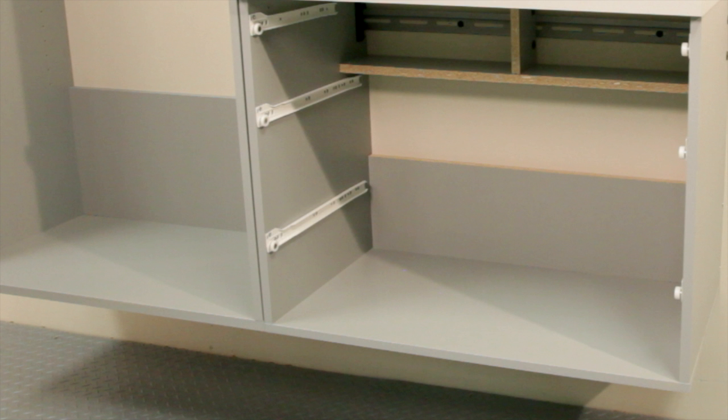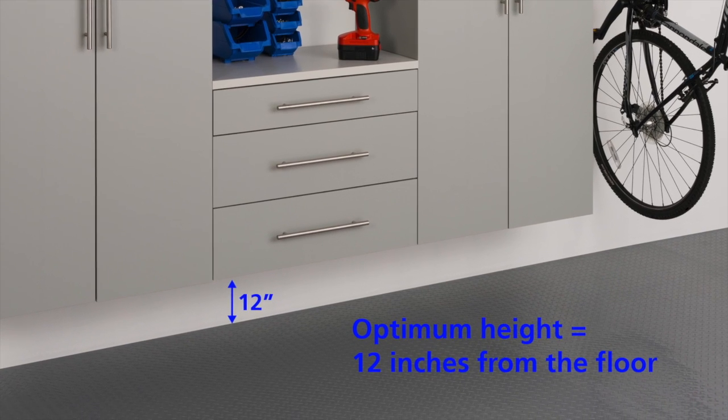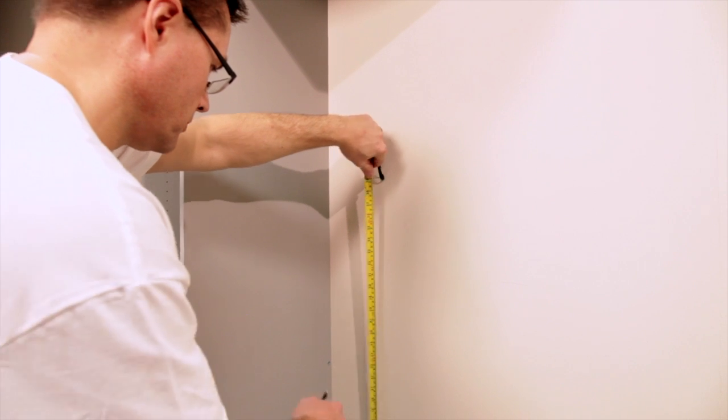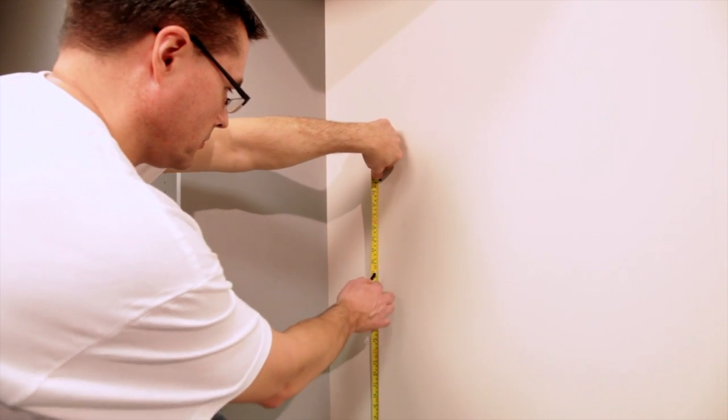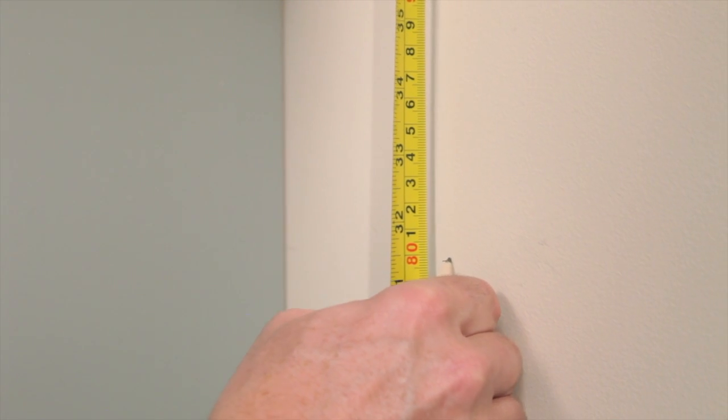We want the bottom edge of the lower cabinets to line up with the bottom edge of the tall cabinets, at 12 inches from the floor. In two places, measure 31.5 inches from the floor and make a mark.